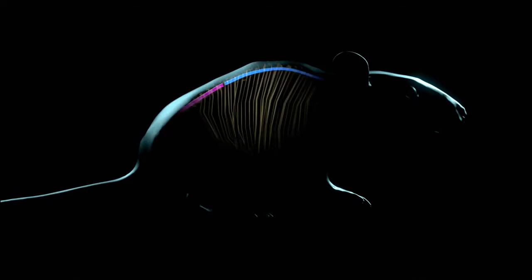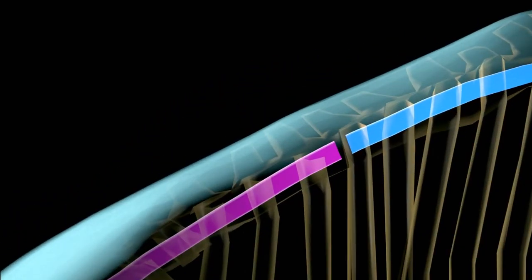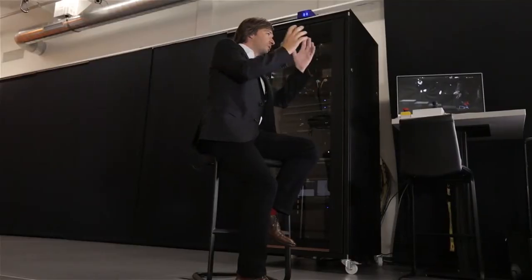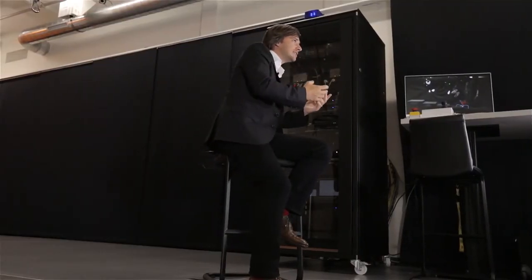We perform experiments with rats that receive a complete transaction of the spinal cord that interrupts the communication between the brain and the spinal cord. This leads to a complete paralysis.